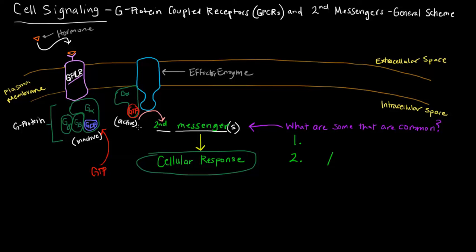It's a little bit different for different cascades. But what sort of examples are there of different second messengers? One really common one is cyclic AMP, cAMP. Another that we're going to talk about later is IP3 and DAG. We'll talk about the pathways that these are involved in in later videos.